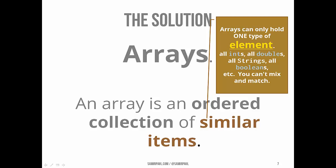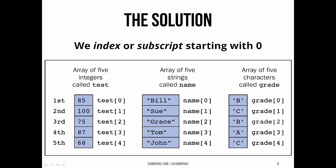The elements all have to be ints, or all doubles, or all strings, and so on — you can't mix and match different types. We can make an array of anything: any primitive type, any reference type. You can see in the examples here we've got an array of test scores (that's an array of integers), an array of string objects, and an array of chars, which are primitives. Each of these arrays happens to have a length of five — there are five elements in each array.